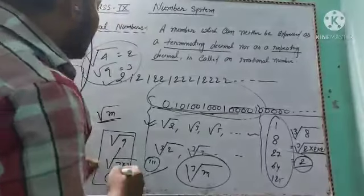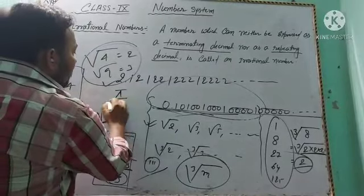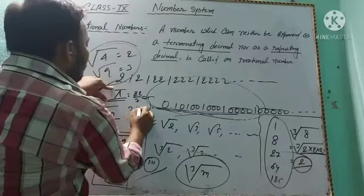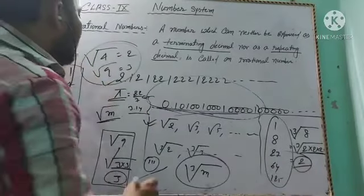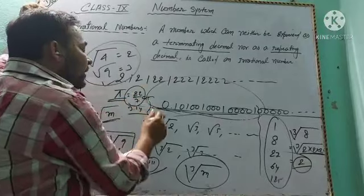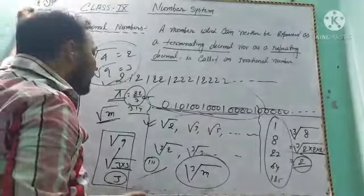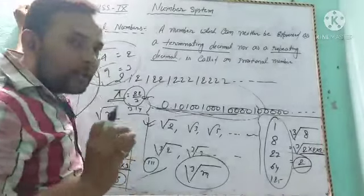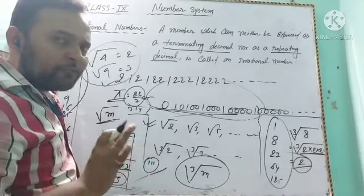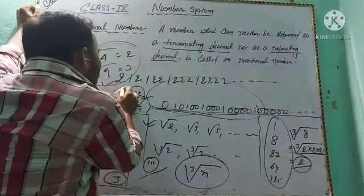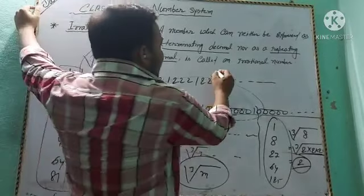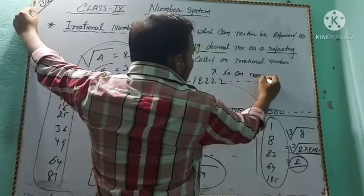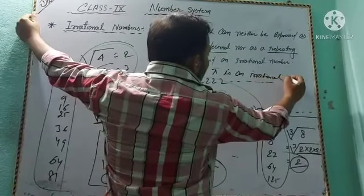Next, π (pi) is an irrational number. The value of π is approximately 22/7 or 3.14. However, 22/7 is only an approximate value — it is not the exact value of π. Therefore, π is an irrational number, while 22/7 is a rational number.